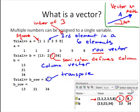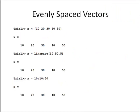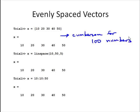One way to create vectors is to just enter in the numbers manually. Oftentimes, we want to create a vector of evenly spaced numbers — for example, evenly spaced numbers between 10 and 50 spaced by 10. Typing that in would get cumbersome for, say, 100 numbers. So MATLAB has a built-in function called the LINSPACE function, which is short for linear space.